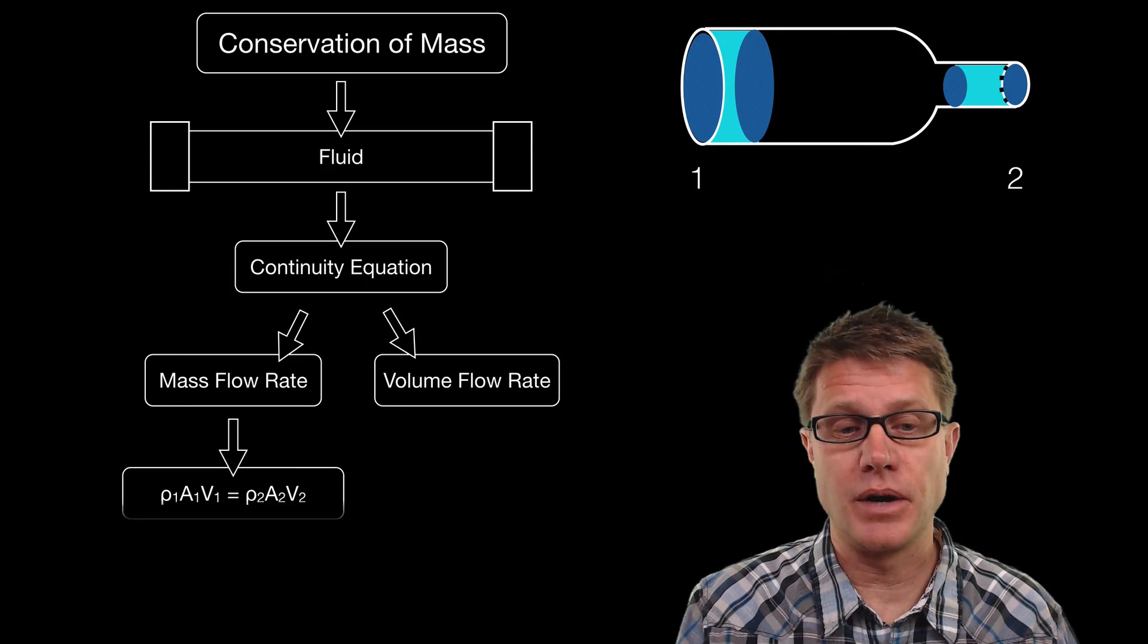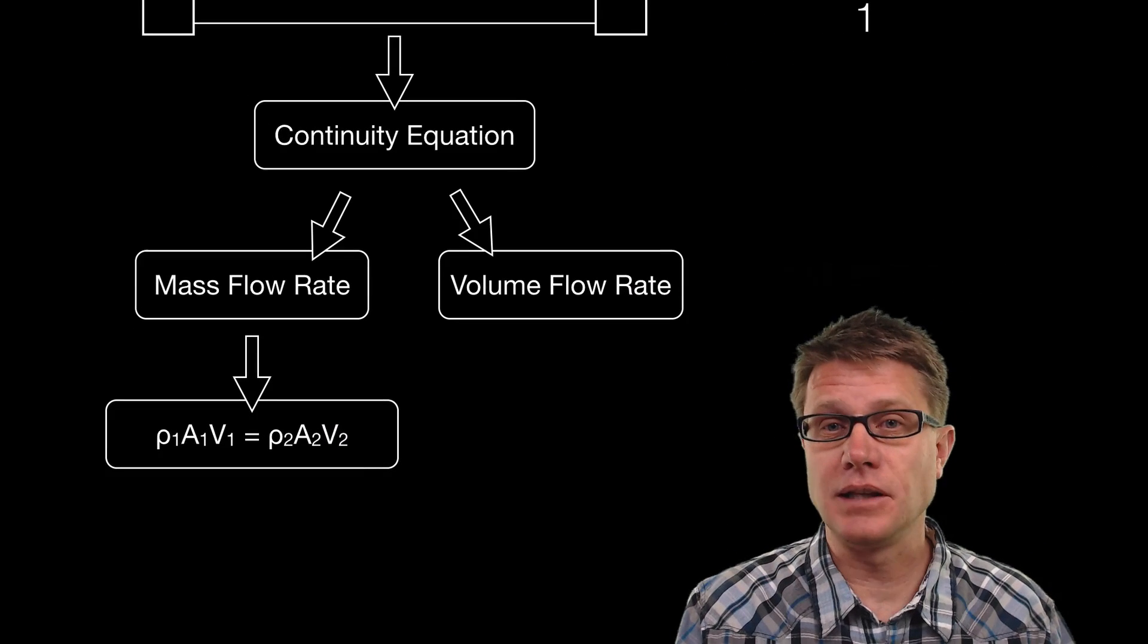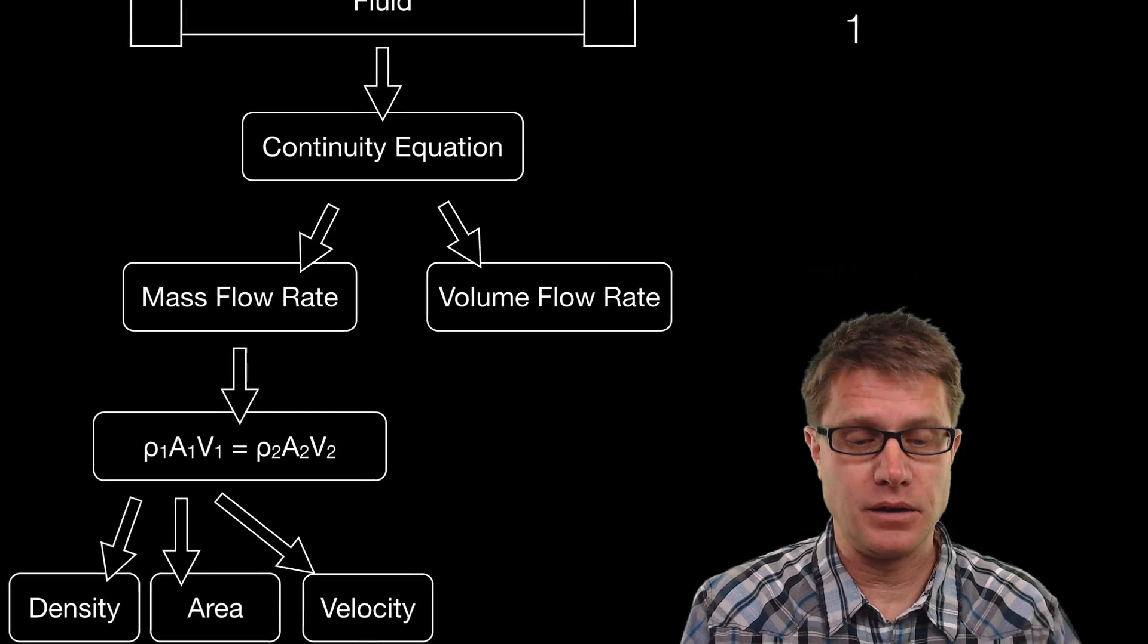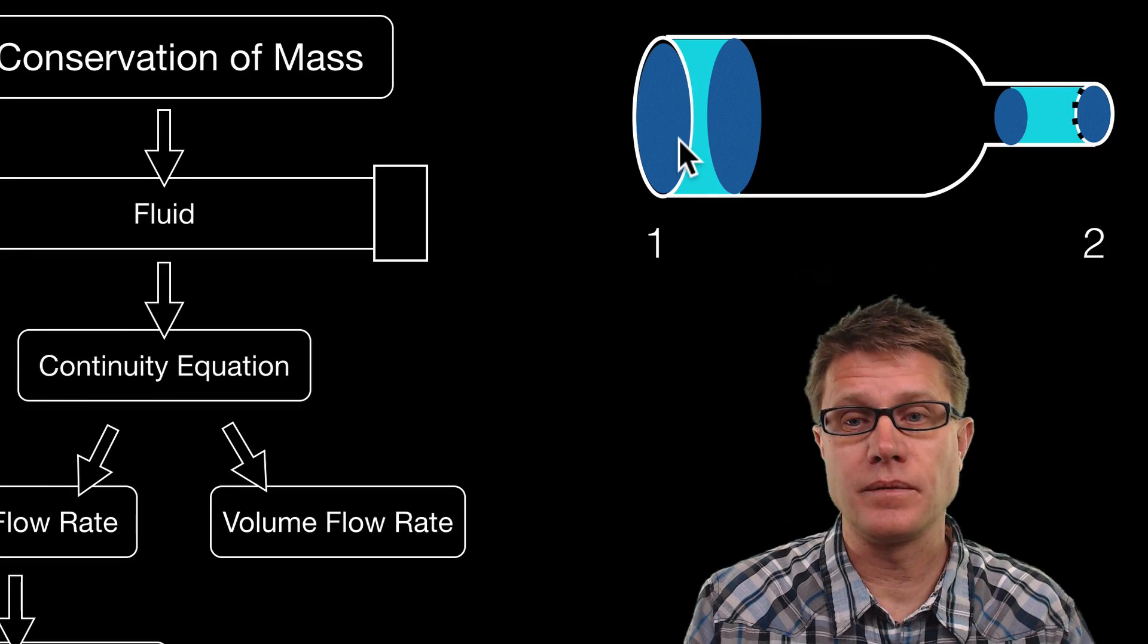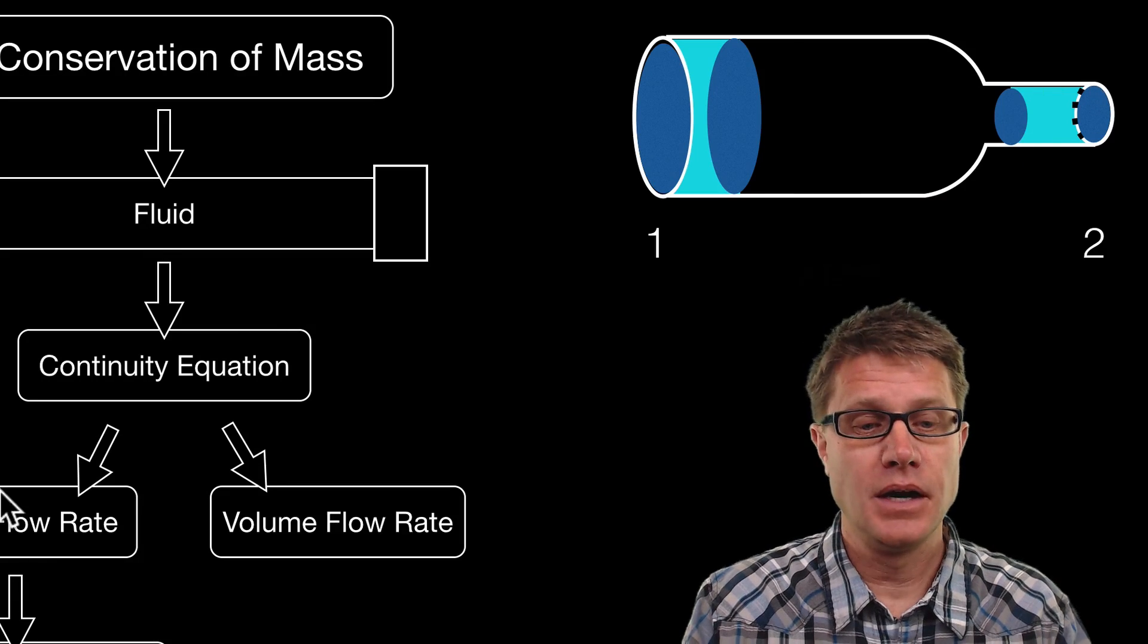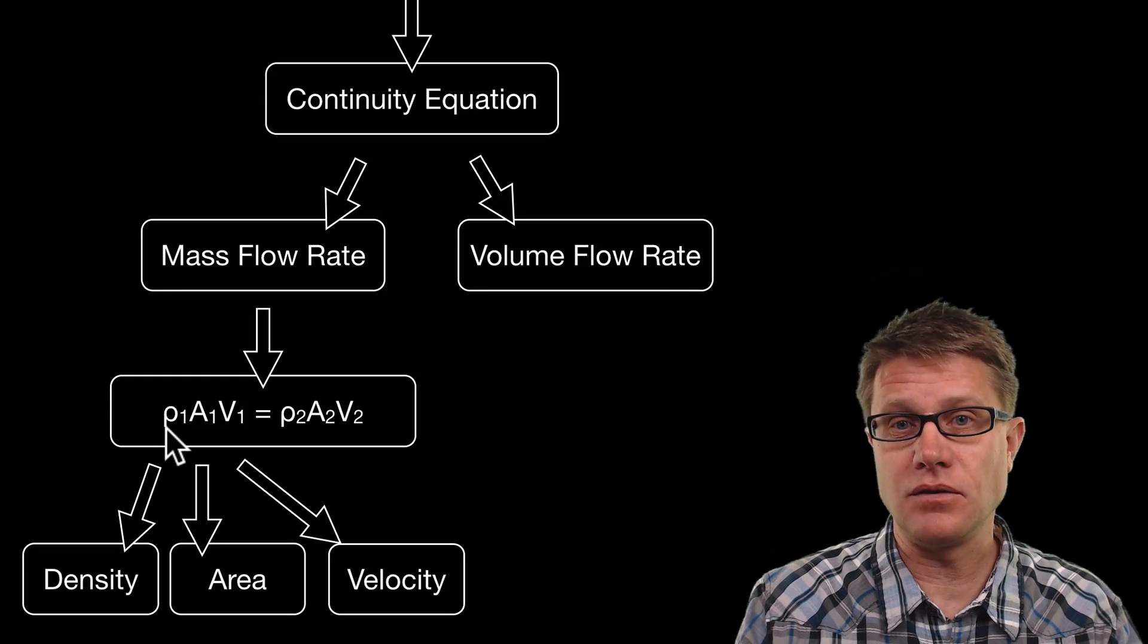If we are looking at the mass flow rate, this is what the equation looks like. It looks a little scary but it is really not that bad. On the left side we have somewhere in the fluid before, that is 1, and then somewhere in the fluid after.